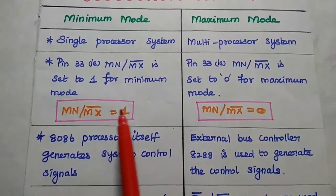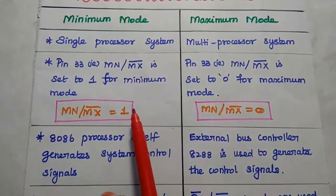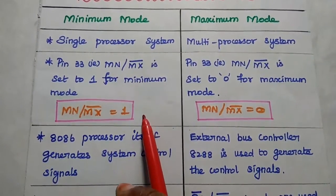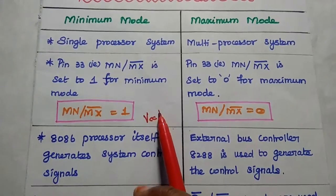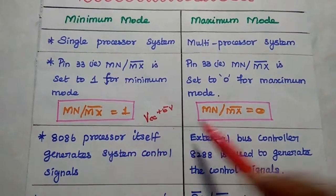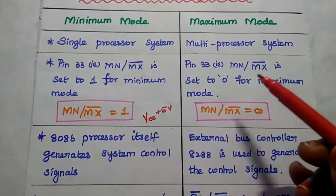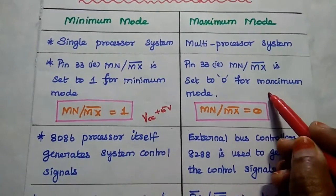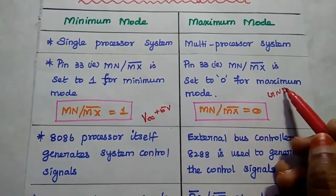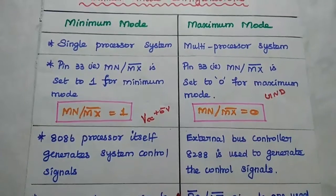If this signal is equal to 1, we are going to connect this pin to the VCC supply, which can be plus 5 volts. If you are going to connect this 33rd pin to ground, then it can be a maximum mode configuration.